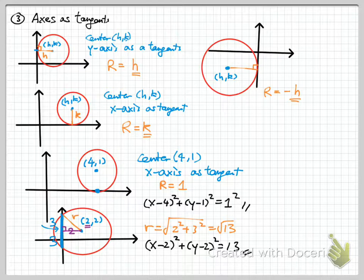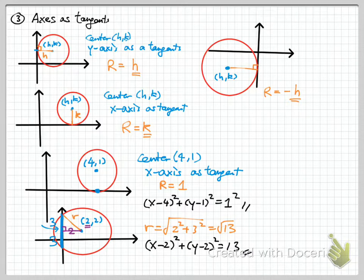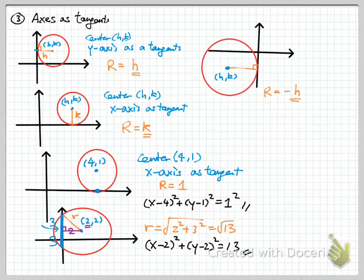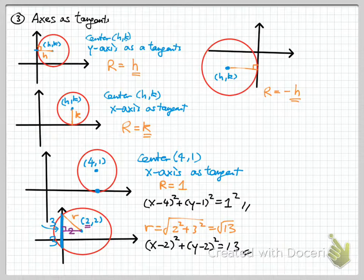This is the third part of this section — using axis as tangent. It seems simple but is very popular in examinations. There is another assignment about how to find the equation of a tangent from various given conditions. That is the end of section 3 in this chapter. There are two more sections remaining. Goodbye.